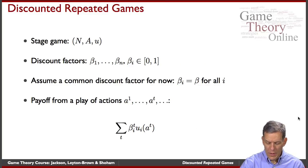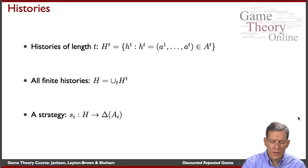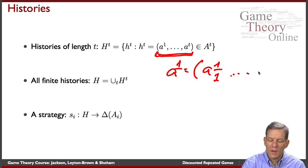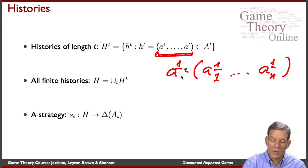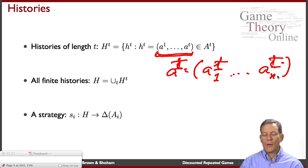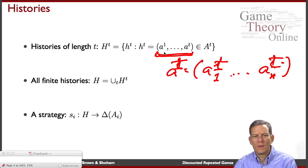Players can condition their play on past history. A finite history of length t is just a list of everything that's happened at every date. A1 is equal to a profile of what every player did in period 1 — the first time we played this game, what did everyone do? Generally AT is what everybody did at time t, so we've got AT_1 through AT_n. These things are vectors telling us what everybody did in the first period, second period, and so forth.